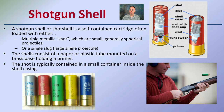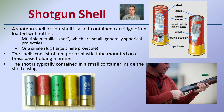Lastly, we have the shotgun shell. A shotgun shell is a self-contained cartridge, often loaded with either multiple metallic shot — very small, generally spherical projectiles — or a single large slug, which is one solid piece of metal. The shell consists of a paper or plastic tube mounted on a base with a primer. Shotguns are typically used for bird hunting, where you want a spread to hit the bird with pellets, or with a slug for deer hunting where your target is very specific.